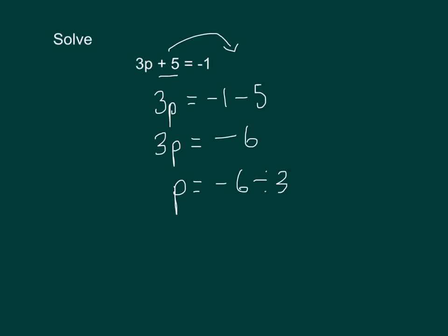And when we work that out, minus 6 divided by 3, when you divide a negative number by a positive, the answer is negative. So p would be minus 2.